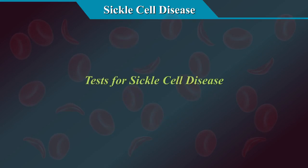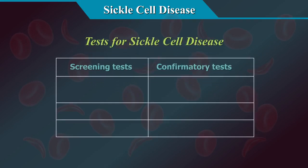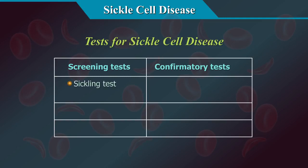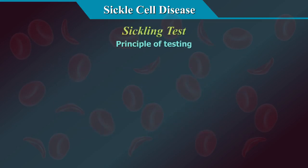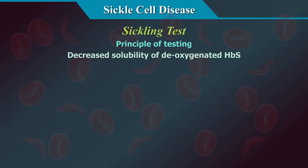Tests for sickle cell disease include screening tests — sickling tests, solubility tests, and rapid card tests — and confirmatory tests including HPLC, electrophoresis, and molecular markers.